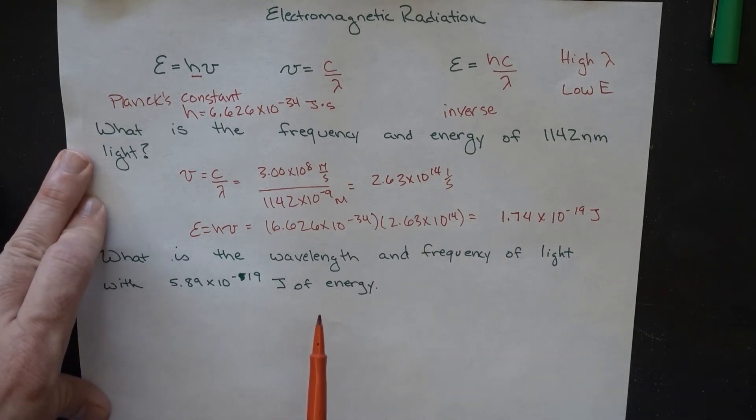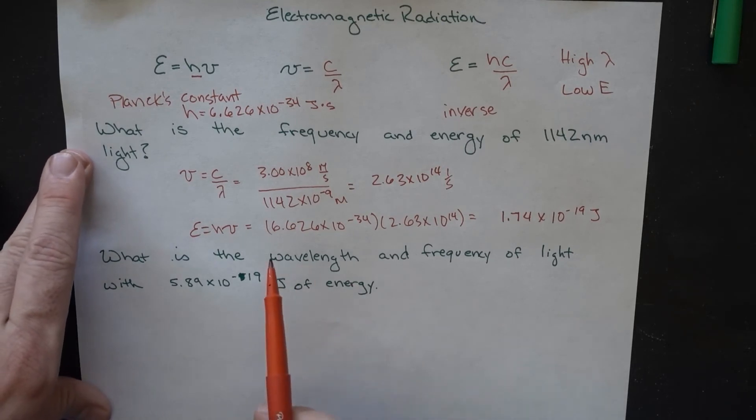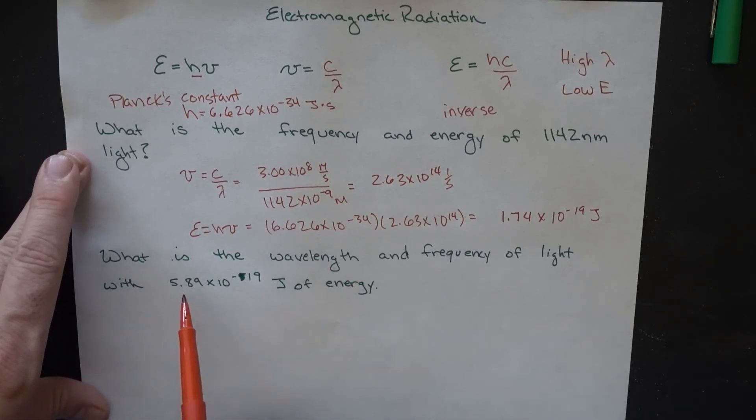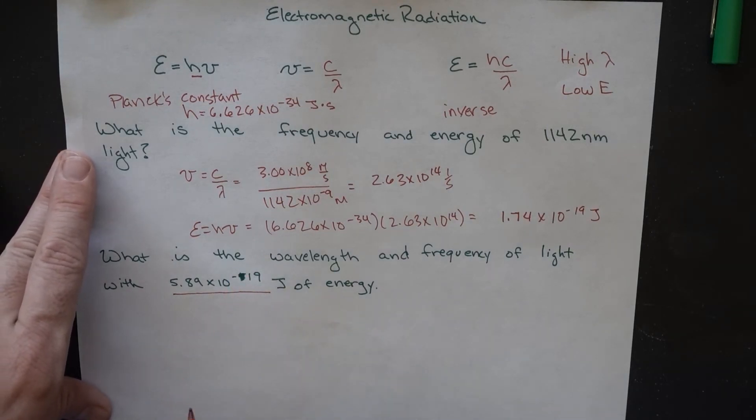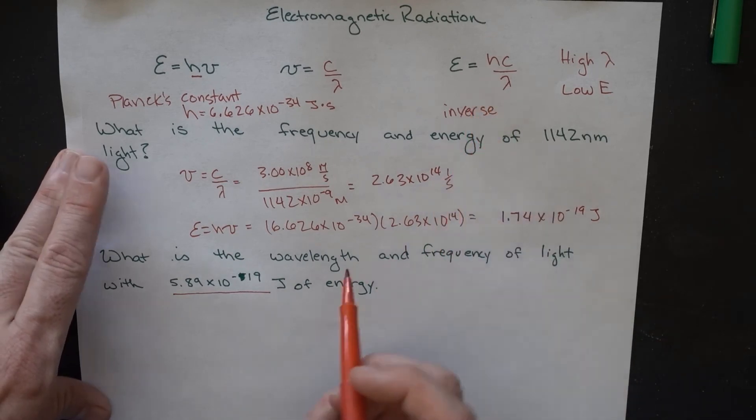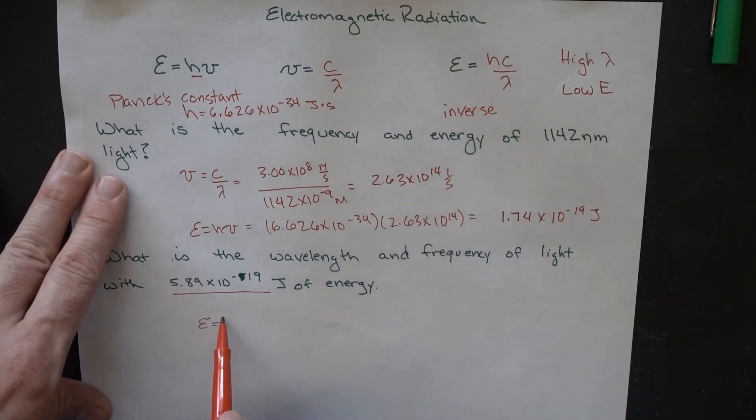We can do the same thing with wavelength and frequency. What is the wavelength and frequency of light with this amount of energy associated with it? We can go about this in a couple of ways. Let's get the wavelength first and we'll use this equation to do it. Energy is equal to HC over lambda.